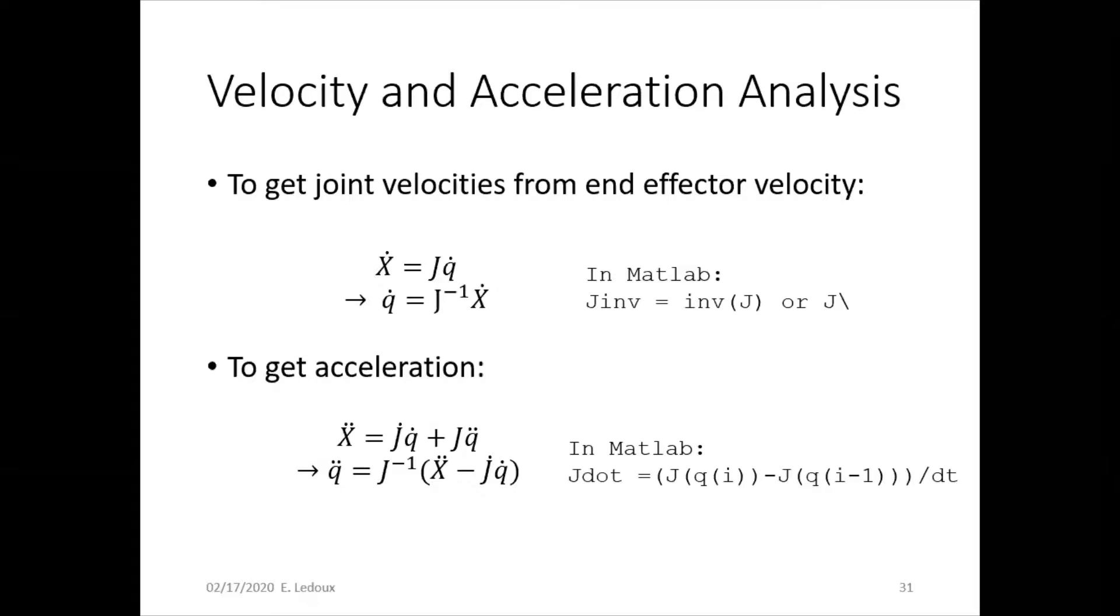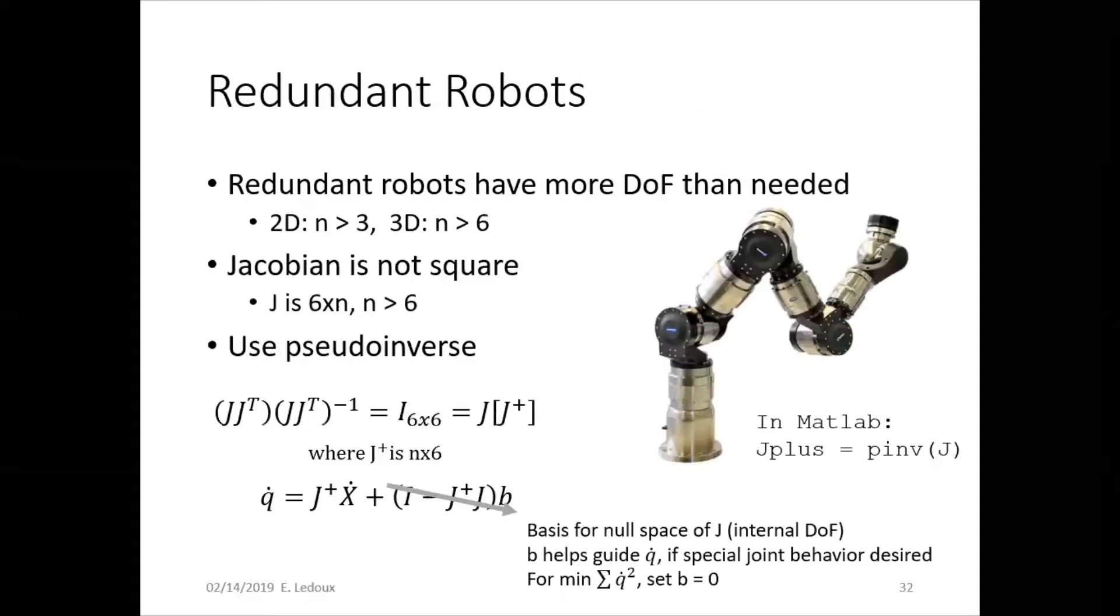You can only take the inverse of Jacobian if it is square. Redundant robots have more degrees of freedom than they're needed. They have too many joints. Which means that in two-dimensional space, they would have more than three joints, or in 3D space, they'd have more than six joints.